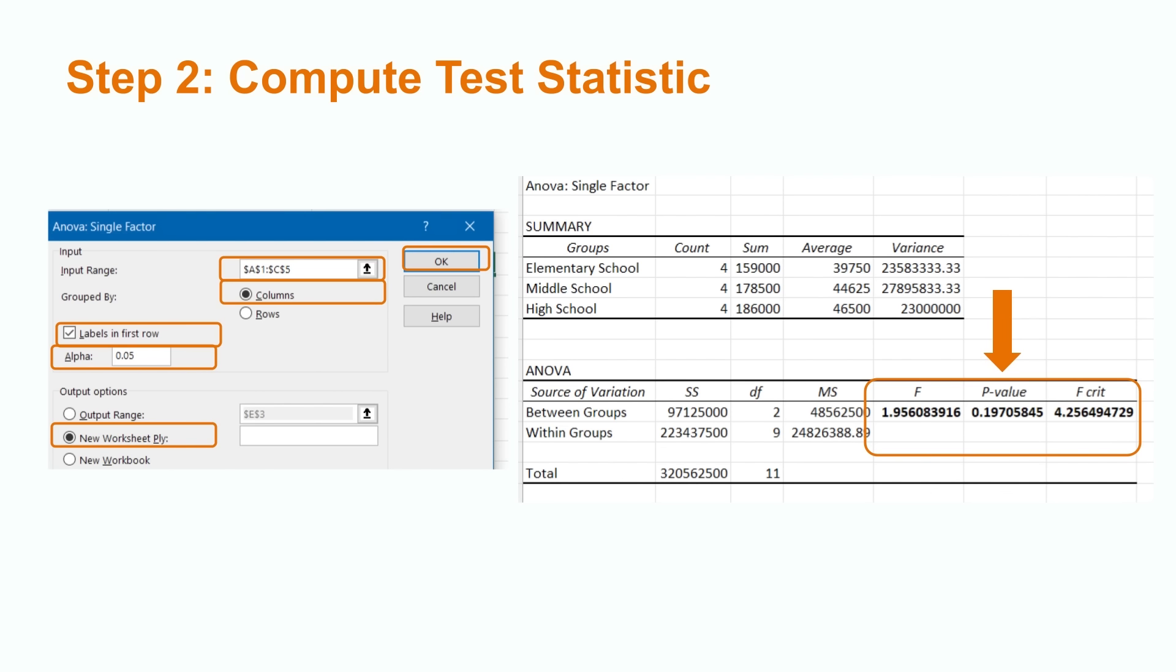We now select our data and make sure that we group our data by columns, include labels, and choose the correct value of alpha, which is the probability of rejecting our null hypothesis if it were true. We also want to output our data on a new page.